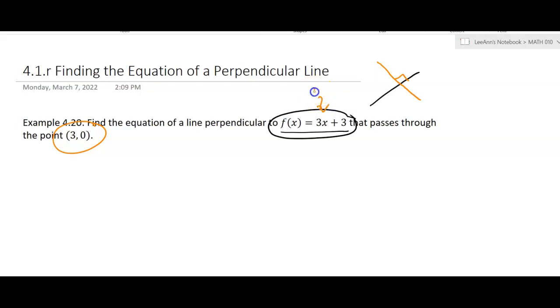So the slope of this line is 3, that means the slope of our line is going to be negative 1 third. So it's got to be the opposite and the reciprocal.